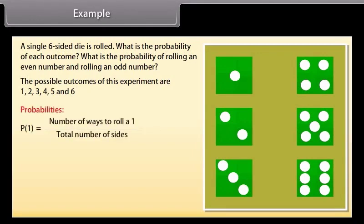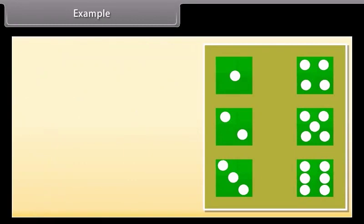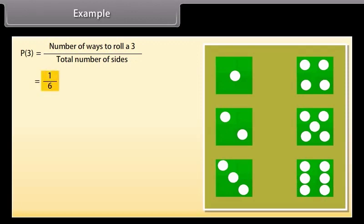Probability of 1 is number of ways to roll a 1 by total number of sides, which equals 1 by 6. Probability of 2 equals 1 by 6. Similarly, the probability of 3 equals 1 by 6. In the same way, we will find the probabilities of 4, 5, and 6.